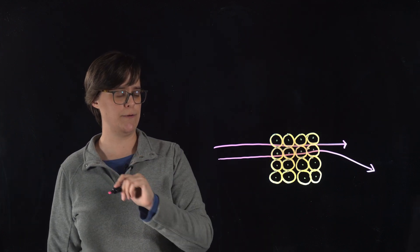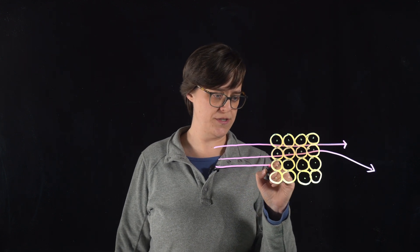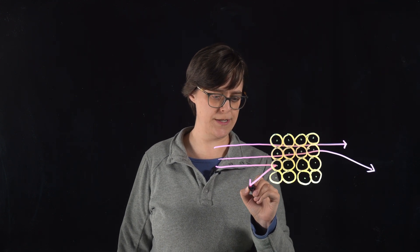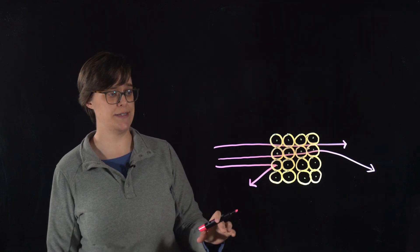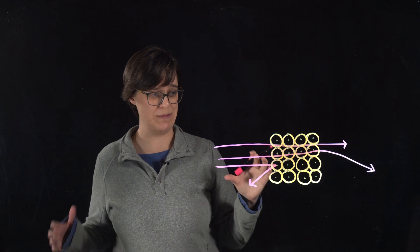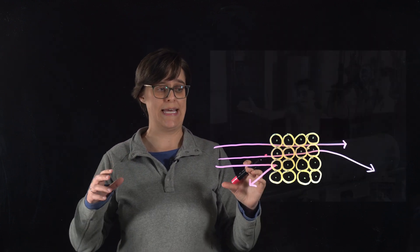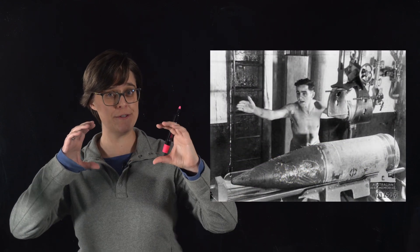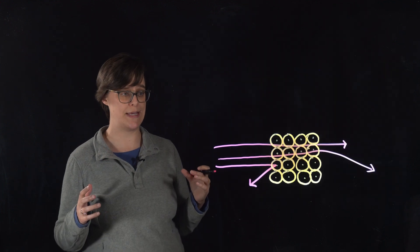But every once in a while, one of the alpha particles just deflected back at a really sharp angle. That is what was very unexpected. It's like they hit something really, really dense. Rutherford described it as, it's as if you fired a 15-inch shell at a piece of tissue paper, and it came back and hit you.